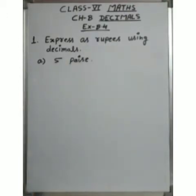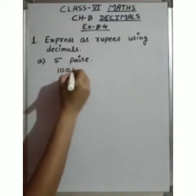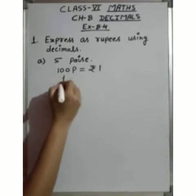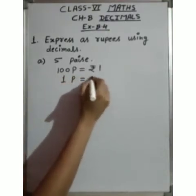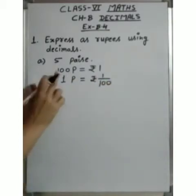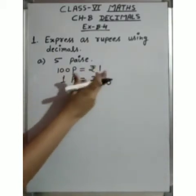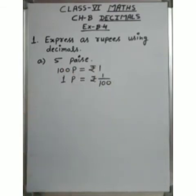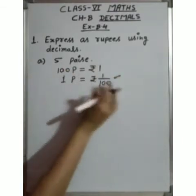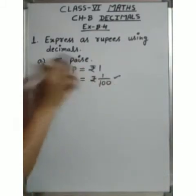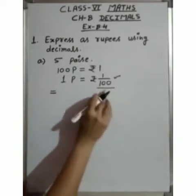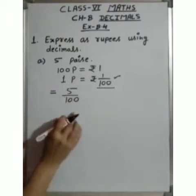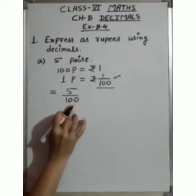We know that 100 paise equals Rupees 1. So 1 paise equals Rupees 1 upon 100. This is our formula to convert paise into rupees. To convert from paise to rupees, we divide by 100.